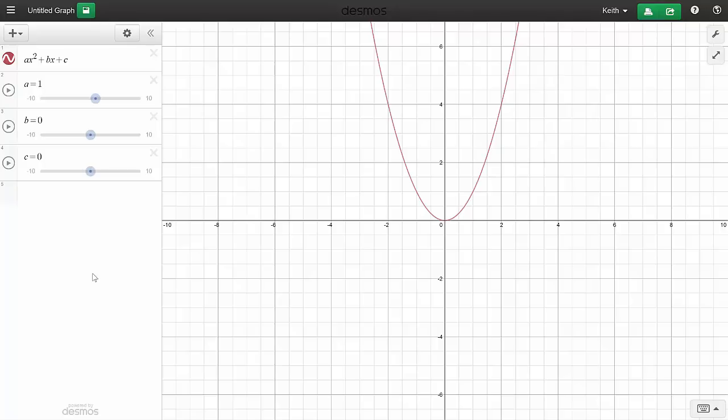I'll leave a at 1 and set b and c to 0, and that centers the parabola on the graph. Now, if a is positive, the parabola will be open on the top like this. As I increase a, the parabola gets more compact. And when a becomes negative, the parabola will be open on the bottom.